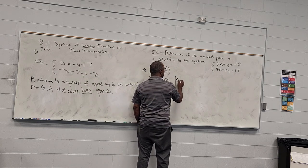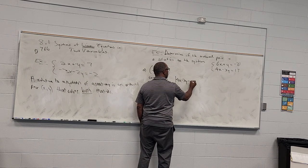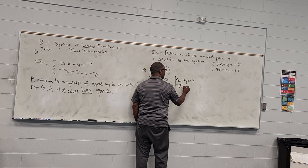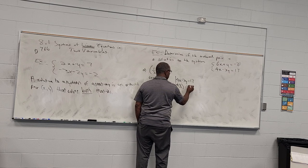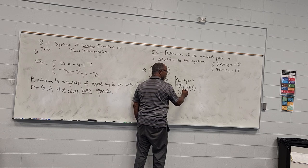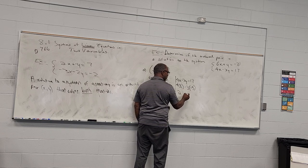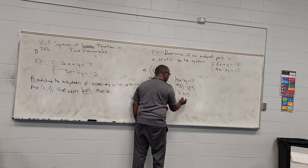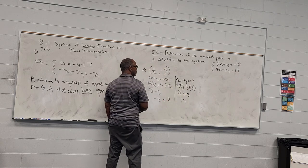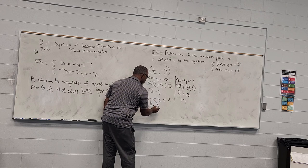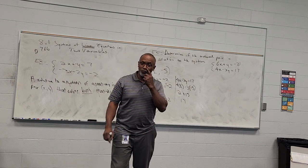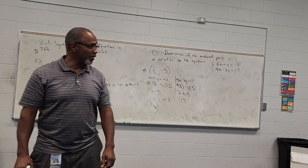Now let's check the second equation, 4x minus 3y equals 17. Where I have x I put one-half, and where I have y I put negative 5. Four times one-half is 2; negative 3 times negative 5 is positive 15; 2 plus 15 is 17. That matches, so yes — this point is a solution to the system because it lives on both lines.